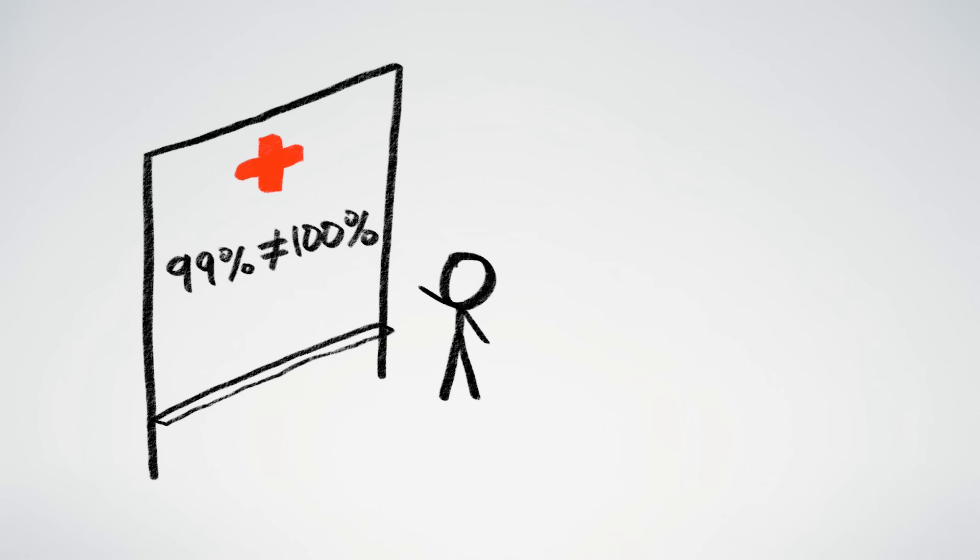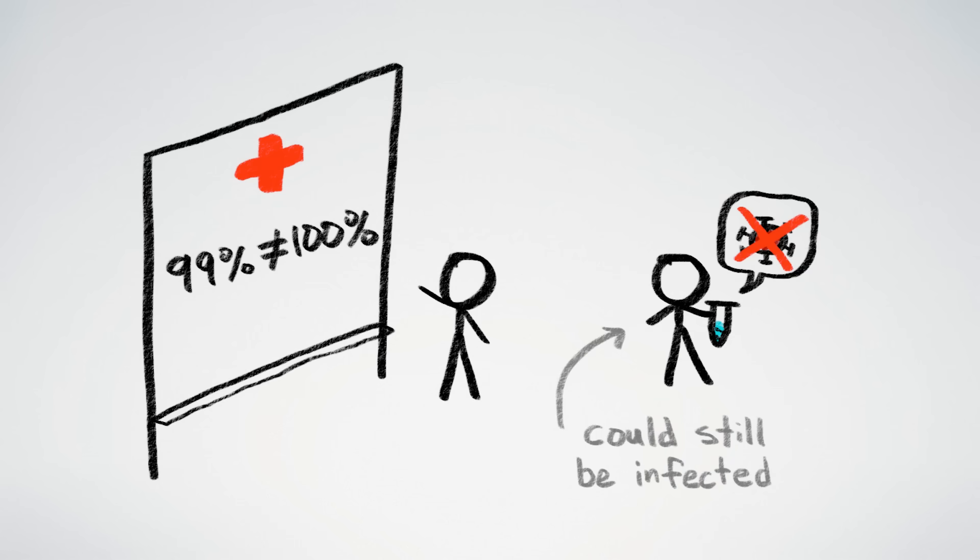No medical tests are perfect, and a negative test result isn't a foolproof guarantee of not being infected. Because rapid tests are less sensitive than PCR tests, this makes it more likely that infected people will slip through the cracks of a test. So as long as COVID is a problem, it's important to still take precautions like wearing a mask and social distancing, even if you test negative.